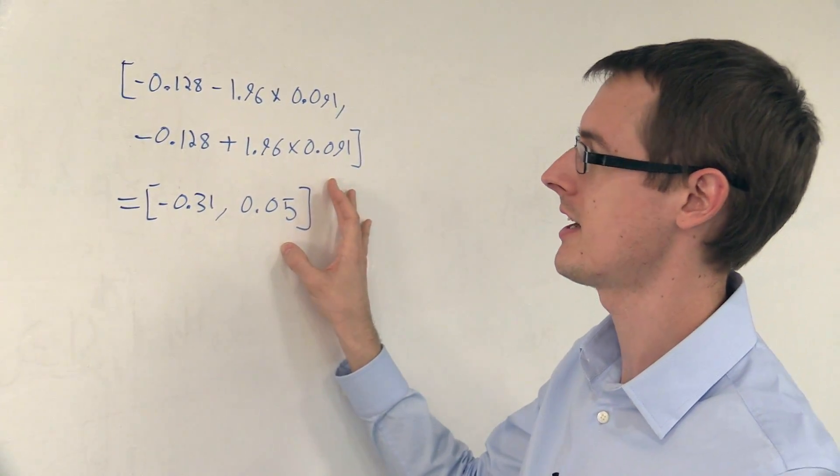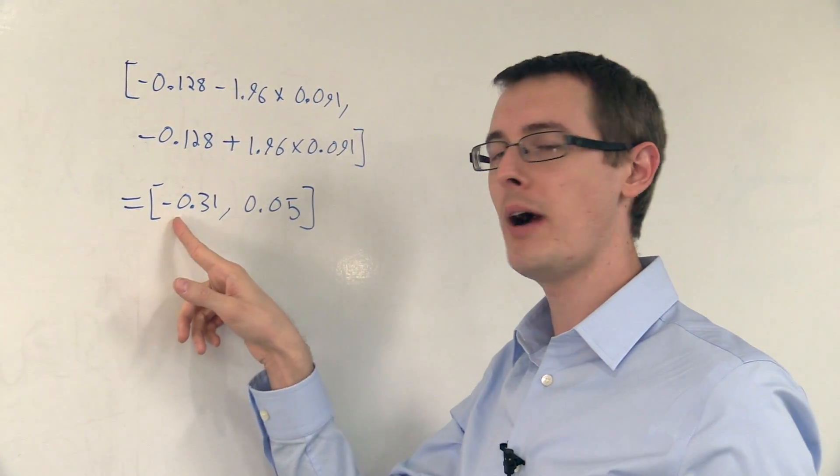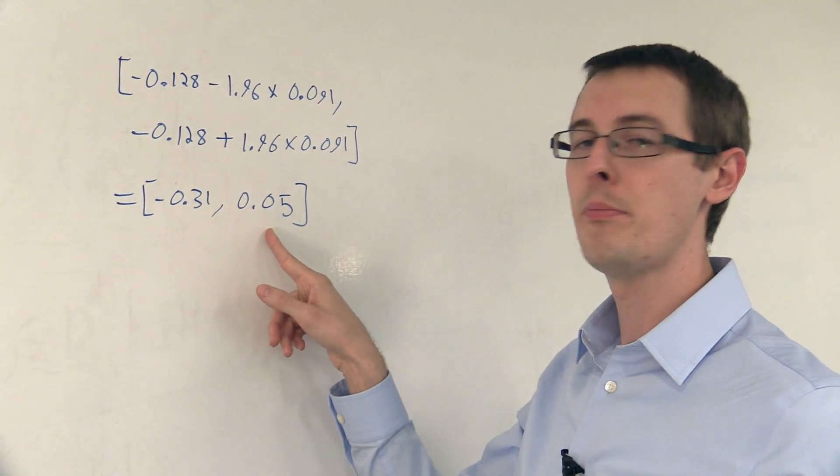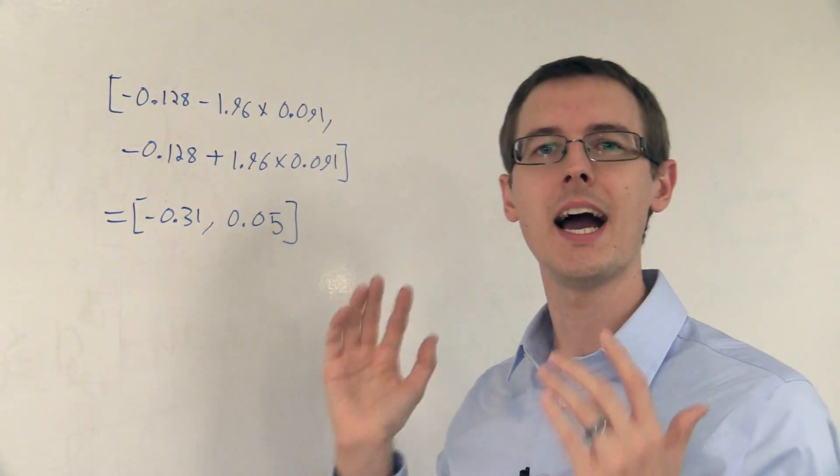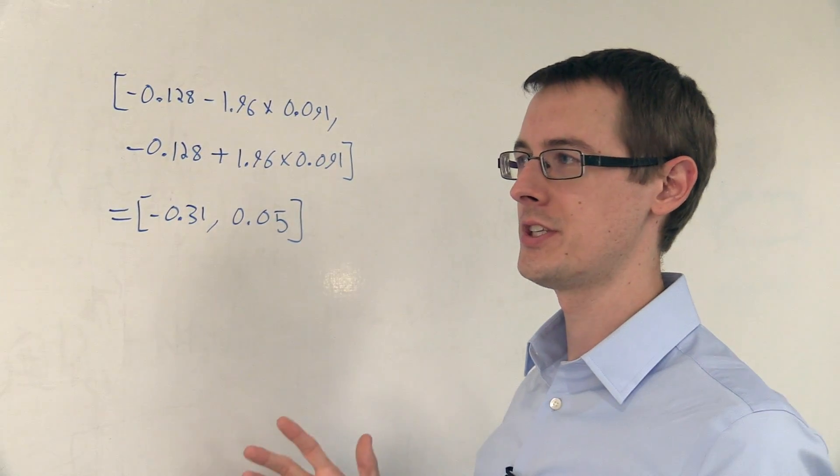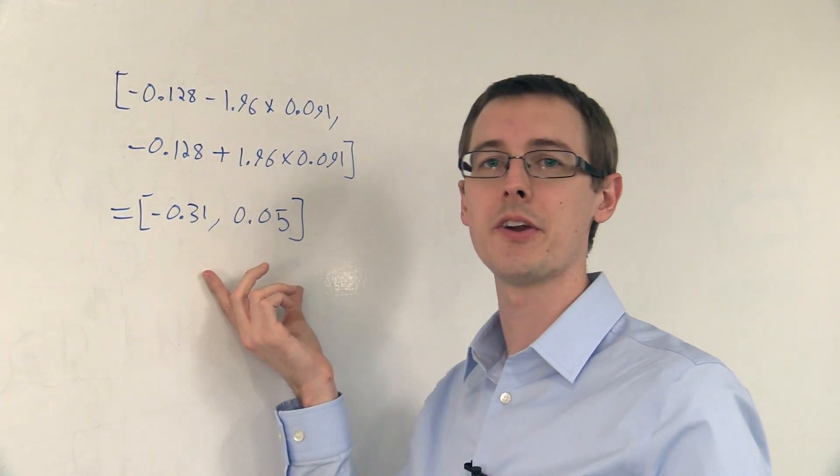So this is our 95% confidence interval. It goes from minus 31% up to positive 5%. So the important thing is, how do we interpret this? Well, first, you ask, is 0 in the interval or not?